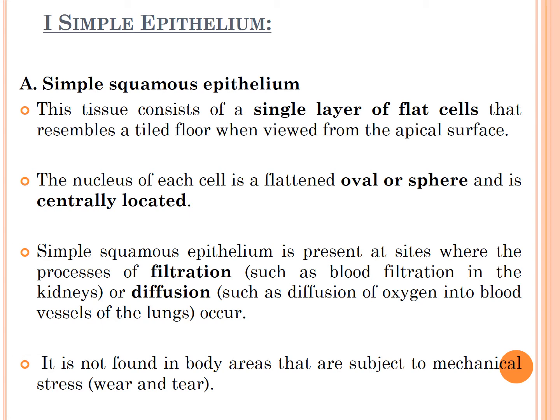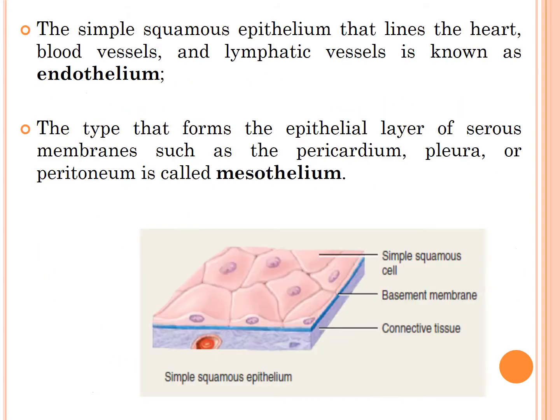The nucleus shape is oval or spear-shaped. Simple squamous epithelium is present at sites where filtration (e.g., blood filtration in the kidney) and diffusion (e.g., diffusion of oxygen into blood vessels of the lungs) occur. It is not found in body areas subject to mechanical stress or wear and tear. Simple squamous epithelium lining the heart, blood vessels, and lymphatic vessels is known as endothelium.